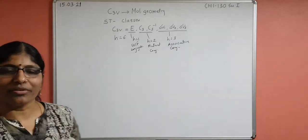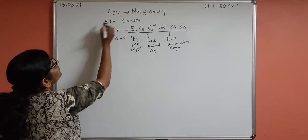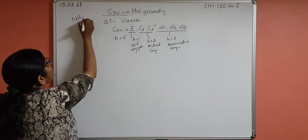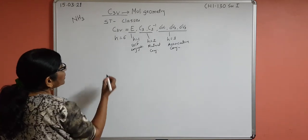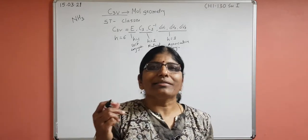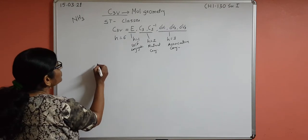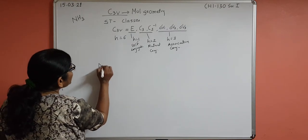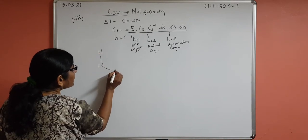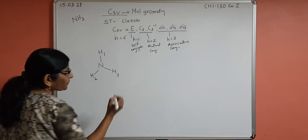We previously did this using the group multiplication table. Now we use molecular structure — for C3V we choose the famous example of ammonia because it's easy to understand. When dividing symmetry elements into different classes, you need a fixed structure. The numbering of hydrogen atoms must remain constant: H1, H2, and H3.